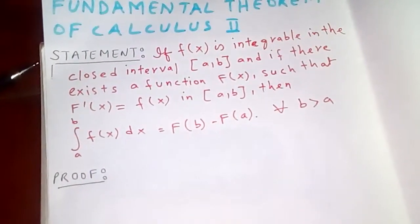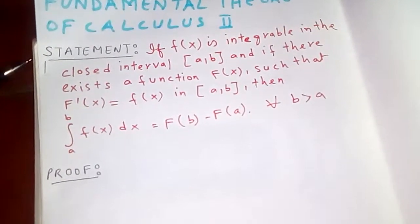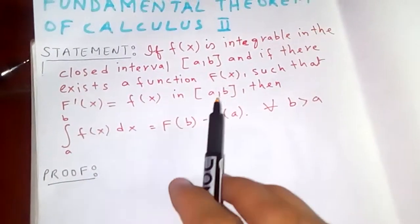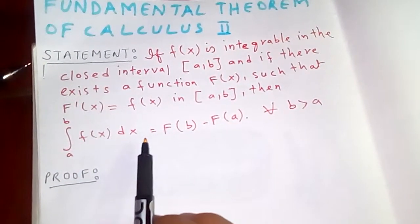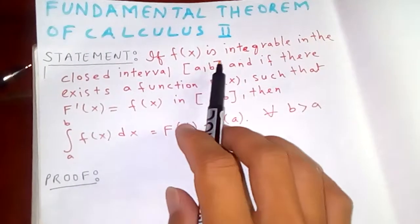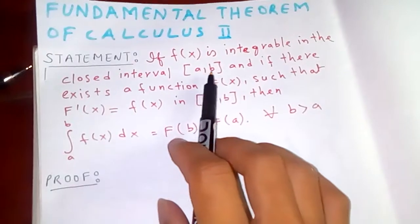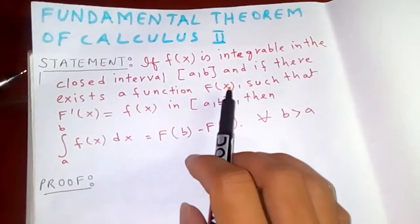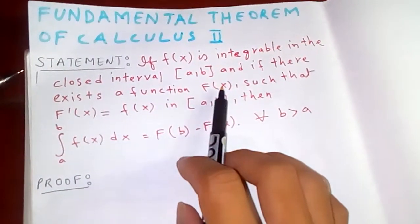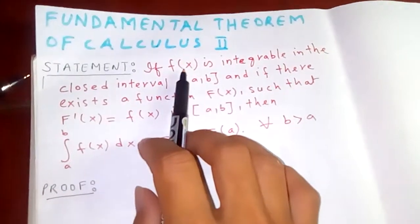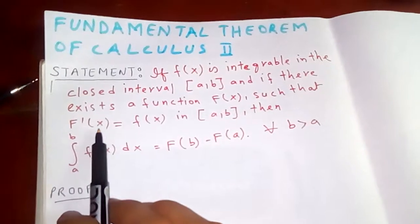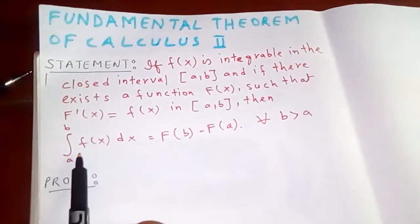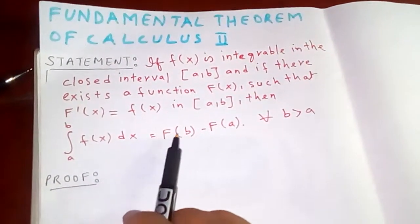Thanks for watching. Today we are going to discuss the Fundamental Theorem of Calculus Part 2. This is the second proof of our theorem. The theorem states that if f(x) is integrable on the closed interval [a, b], and if there exists a function F(x) which is the antiderivative of f(x) such that F'(x) = f(x), then the integral from a to b of f(x) dx equals F(b) minus F(a).